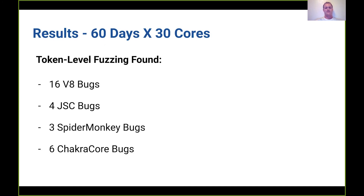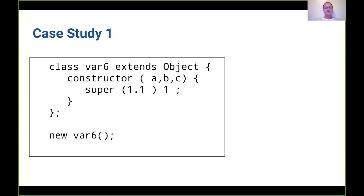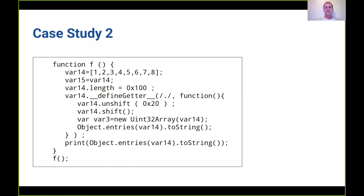A good number of the bugs ended up being debug checks or not exploitable, but we did find exploitable bugs for every single JavaScript engine. For case studies: one example is a very simple syntax error after a call to super that triggered an out-of-bounds read in V8's JavaScript engine. Google's internal fuzzers never found this bug because they don't generate this sort of invalid syntax, but token-level fuzzing does. Another case study is a bug also in V8 — a more complex one with many statements and no syntax errors — which gets parsed and run successfully, found due to the coverage-guided nature of token-level fuzzing.